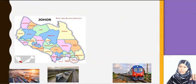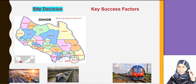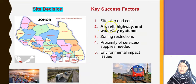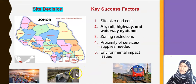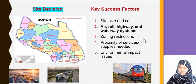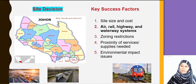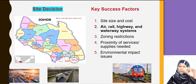After deciding on Johor, you narrow down further to the site decision. For example, Pasir Gudang — you check for highway access, port (Pasir Gudang ada port), rail connections, zoning restrictions, and environmental impact issues. There's also a halal hub dekat kawasan Kongkong, so we can check what incentives they offer there. So we narrow down from country, then to region, then to site decision — that is the step.